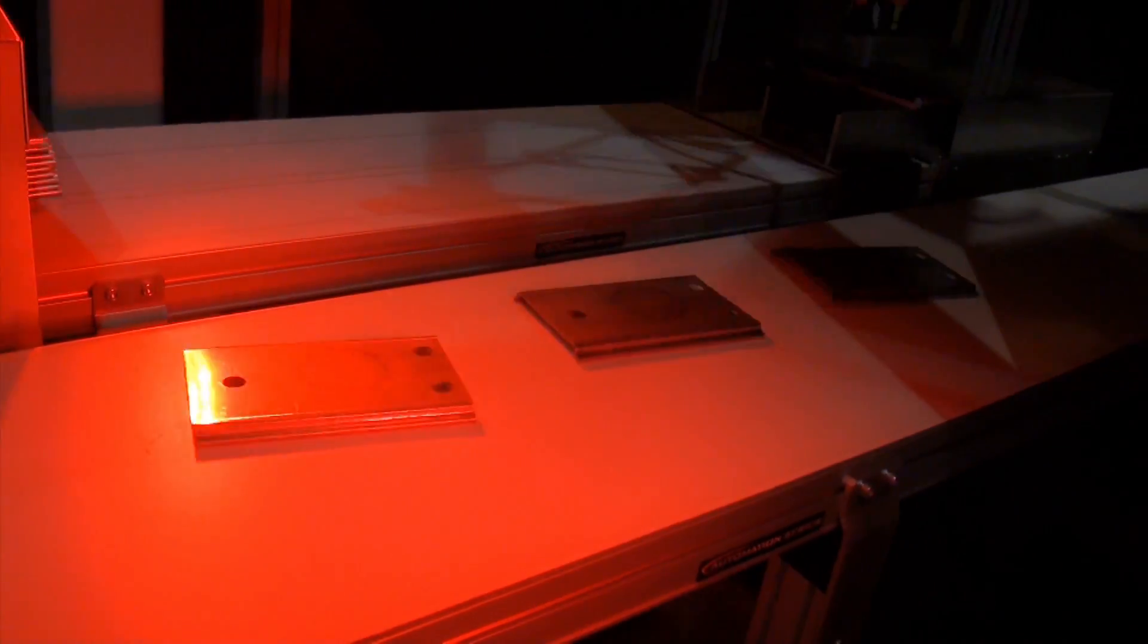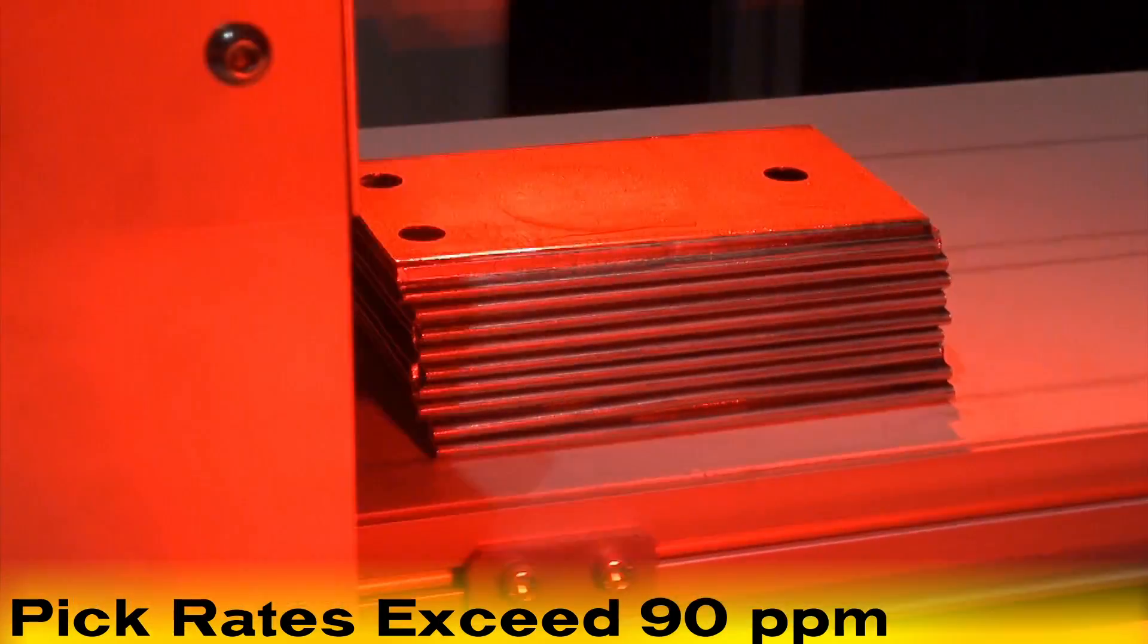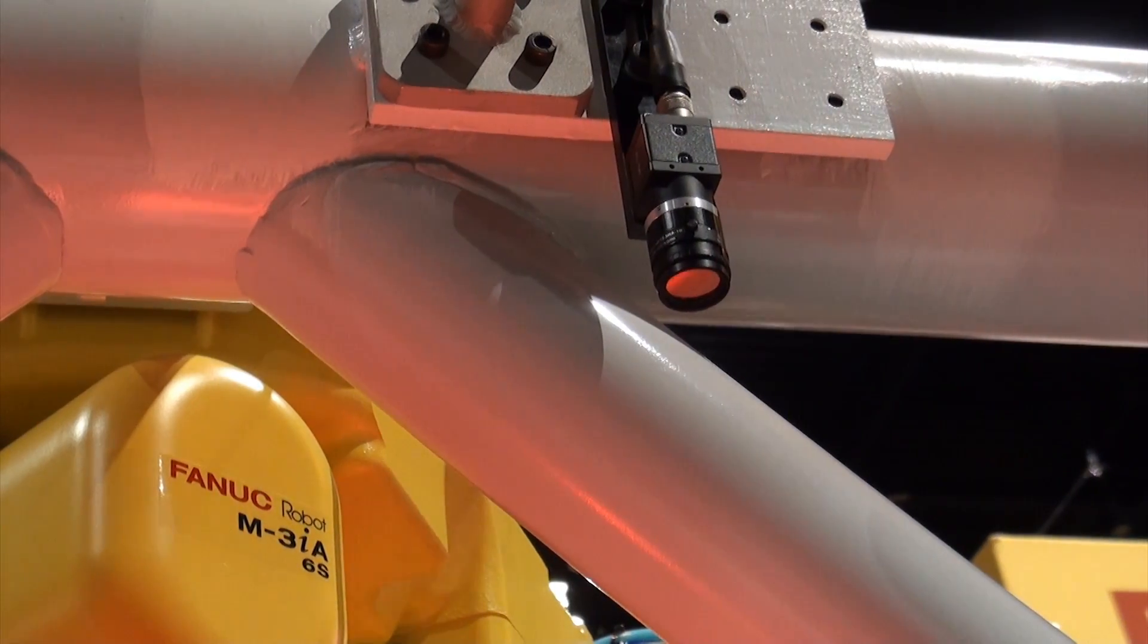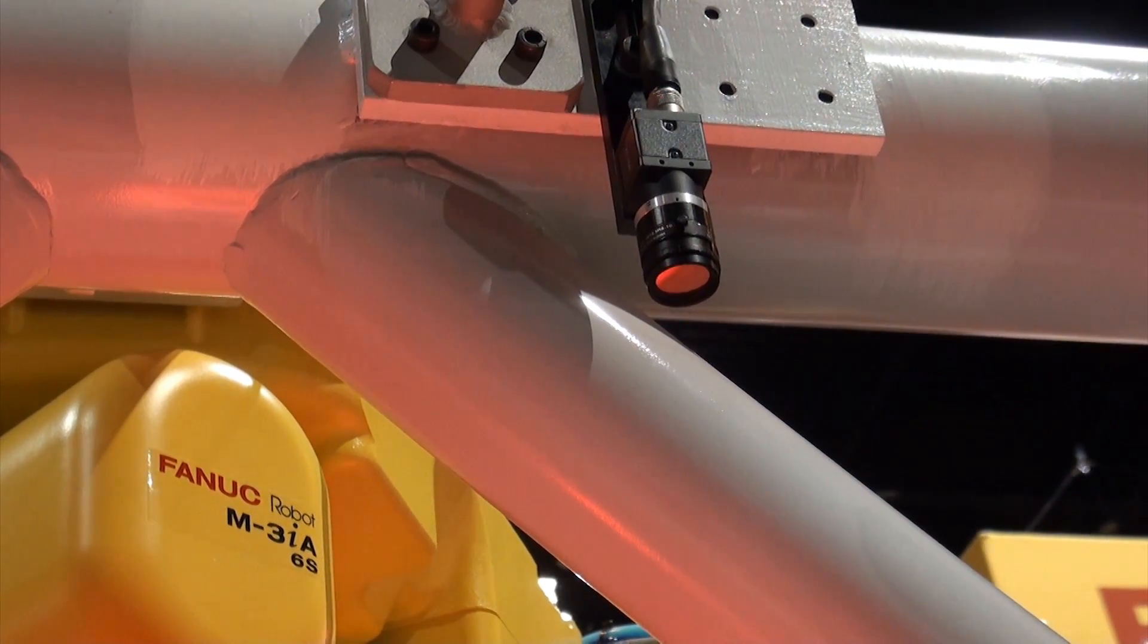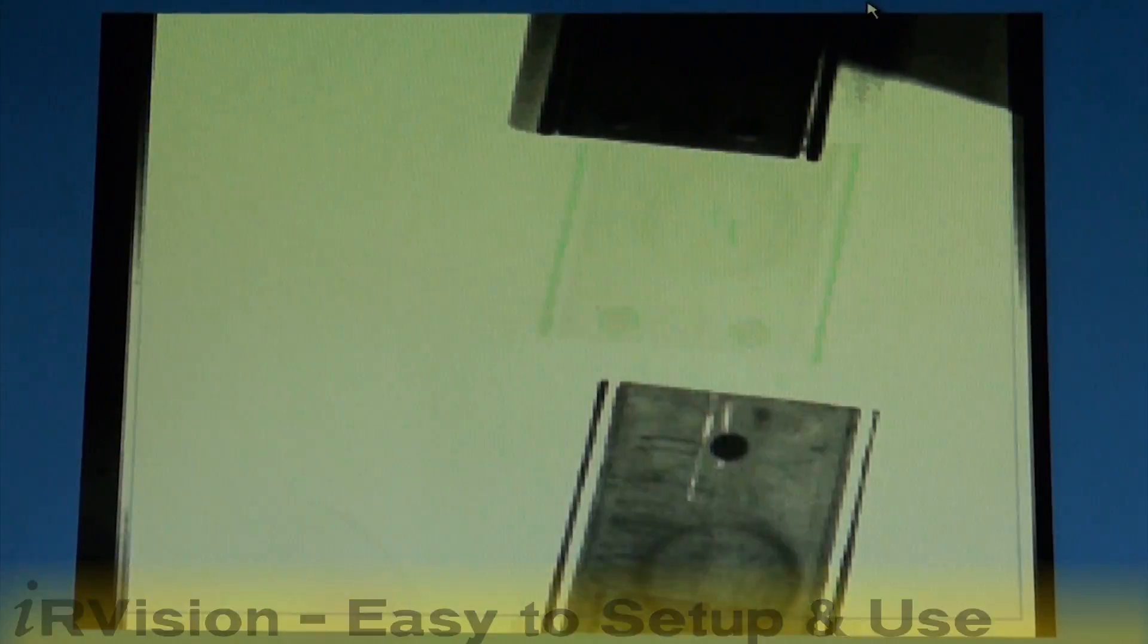These encoders provide for speed, position, and direction inputs for accurate location of the parts. This robot can stack parts at rates exceeding 90 picks per minute. A single source solution developed and supported by FANUC, IR Vision offers easy setup and operation for factory environments. A monitor displays what this camera is seeing.